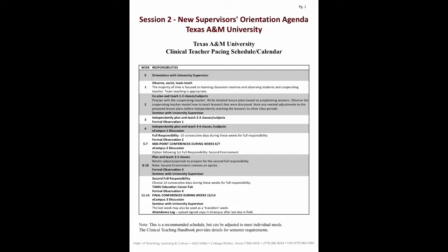Scan down the pacing schedule to weeks five through seven. Full responsibility consists of ten consecutive days. So full responsibility could be during weeks five and six, six and seven, or it may even have to be during weeks seven and eight. The important thing is to be flexible. Ten consecutive days do not always work out due to staff development days, holidays, testing, etc. Just skip over those days and continue counting to ten.